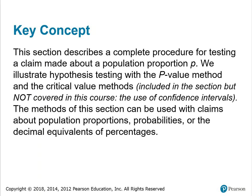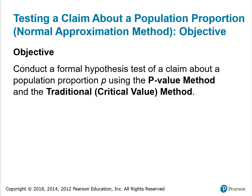Included in this section but not covered in this course is the use of confidence intervals to test hypotheses. The methods of this section can be used with claims about population proportions, probabilities, or the decimal equivalence of percentages. The objective is to conduct a formal hypothesis test of a claim about a population proportion P using the P-value method and the traditional critical value method.